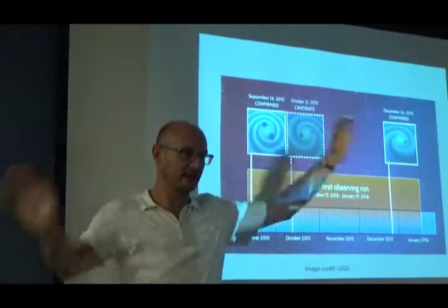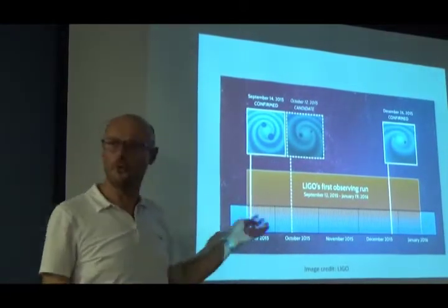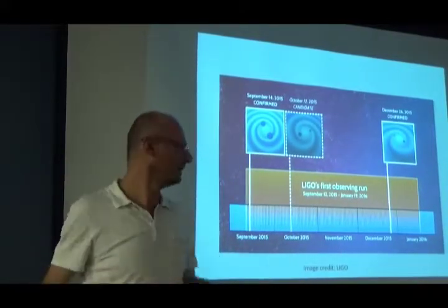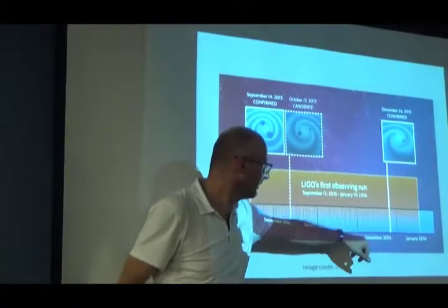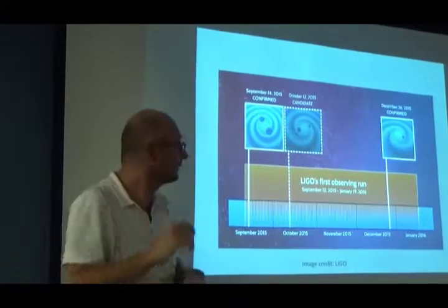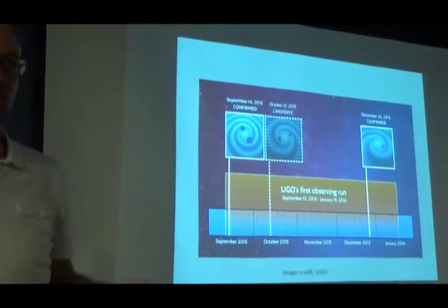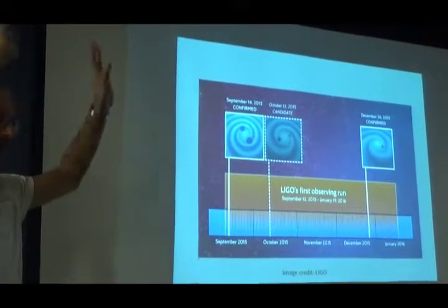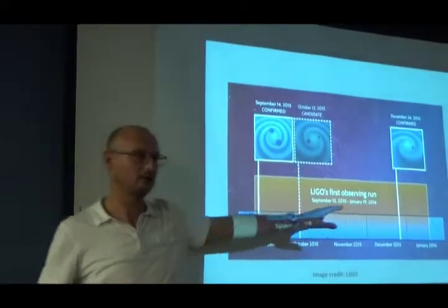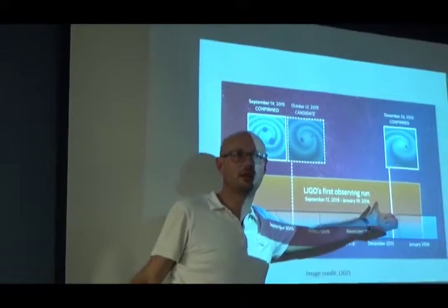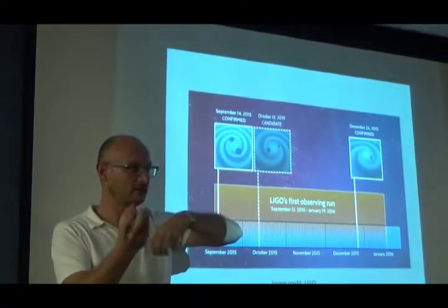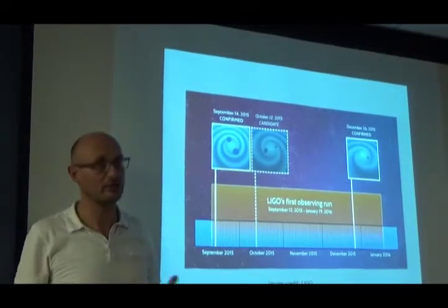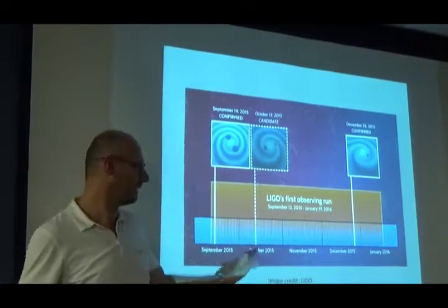We were running for four months. At the end of the month, December 26, 2015, another one comes, very loud as well. A second one. This didn't make headline news—it did for us because we're like, 'Oh my goodness, we saw another one.' No doubt. This one consisted also of two black holes orbiting around each other. The masses were different, the way they were rotating was different, but truly, again, we were in shock.